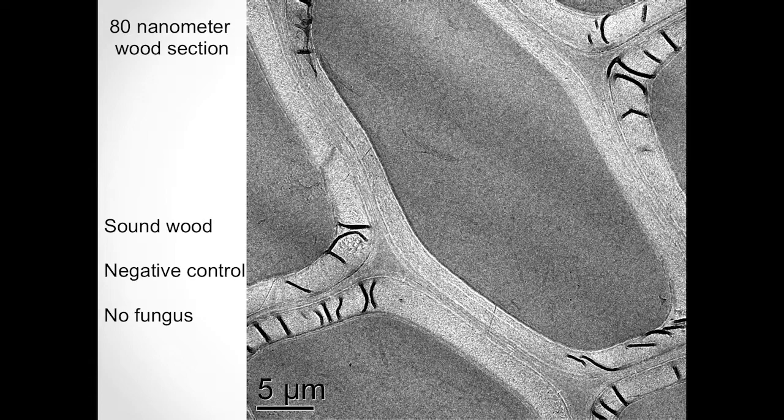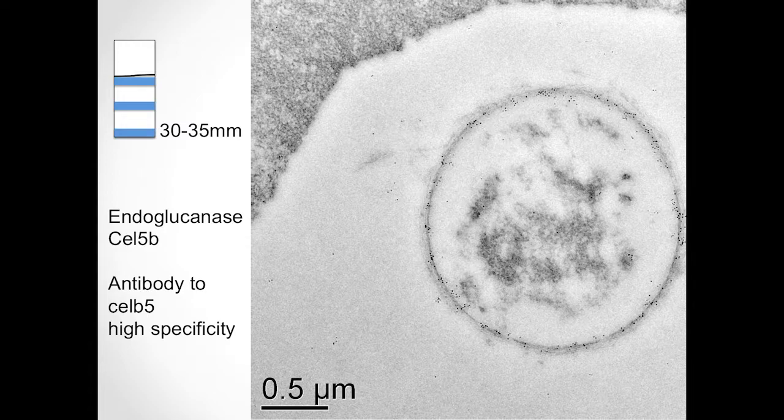The black lines you can see here are actually not that important — these are artifacts from the embedding process, where we have little wrinkles in the plastic as the samples were cut. So this is what a wood cell would look like without the fungus. Next, we are trying to see if the immunolabels that had been generated are actually useful for our study. Up here in the corner you can see our plant cell wall, and the circular structure here is the fungal hypha from Postia placenta in cross section.